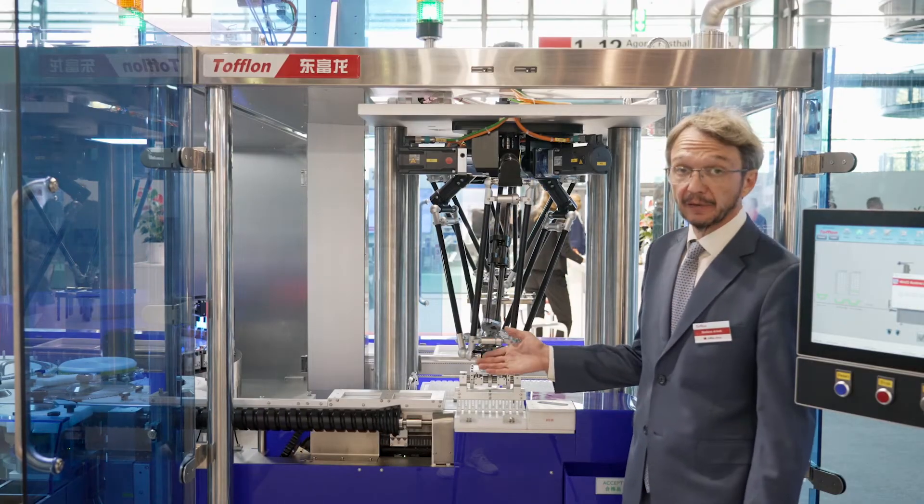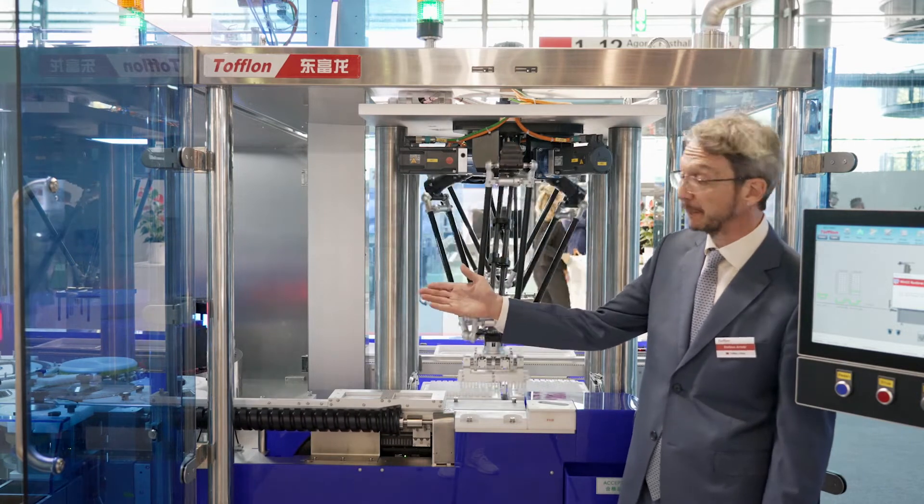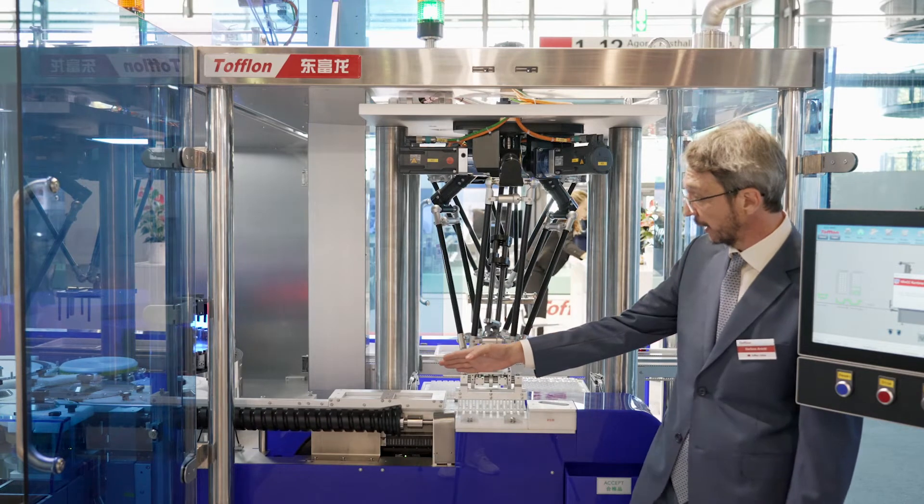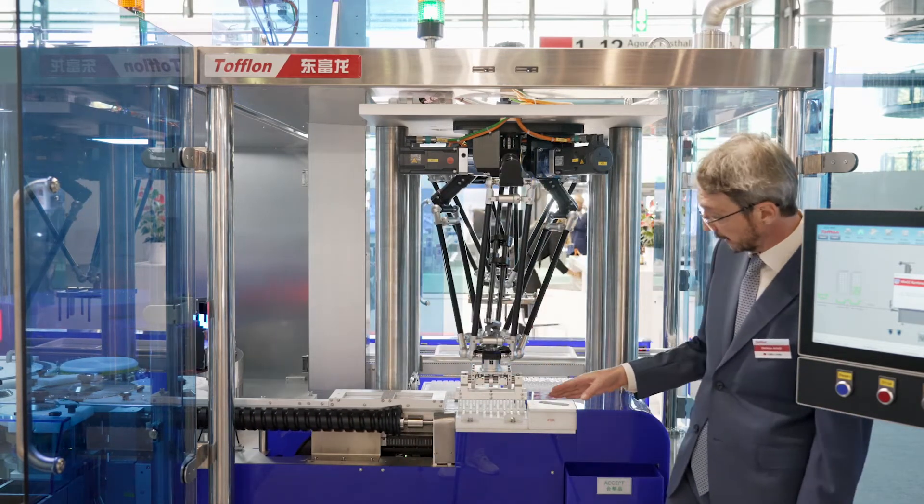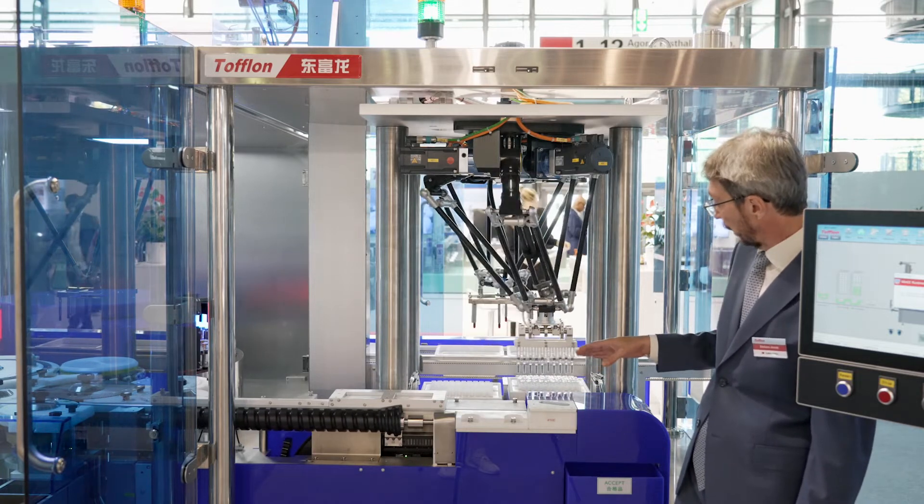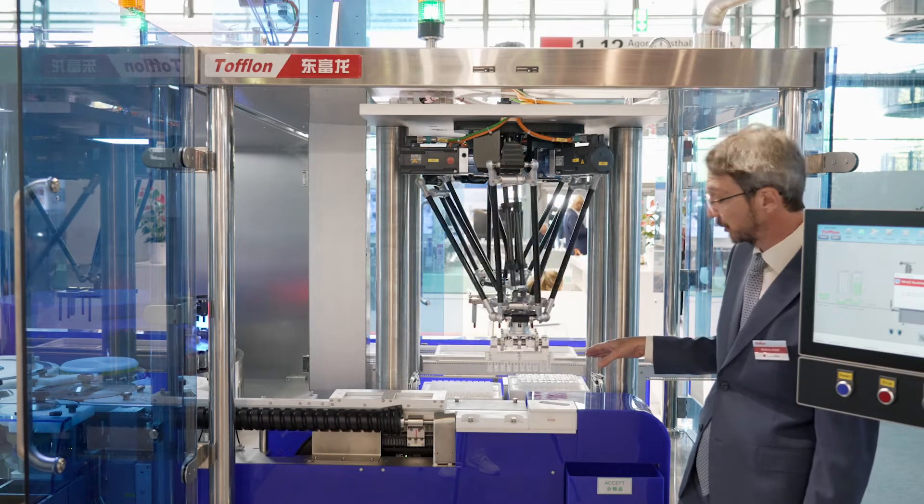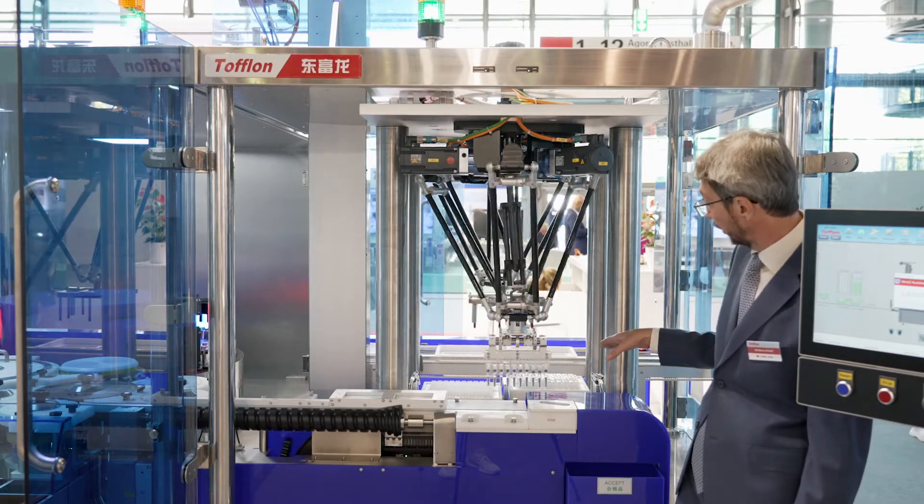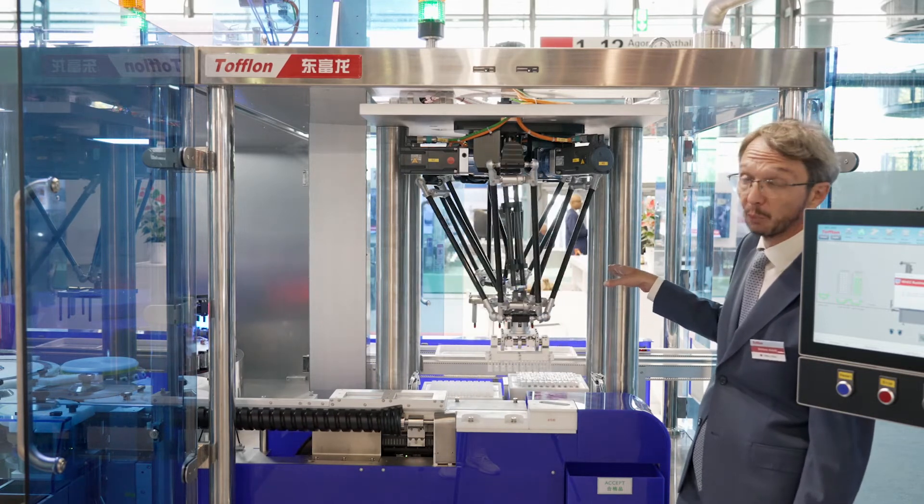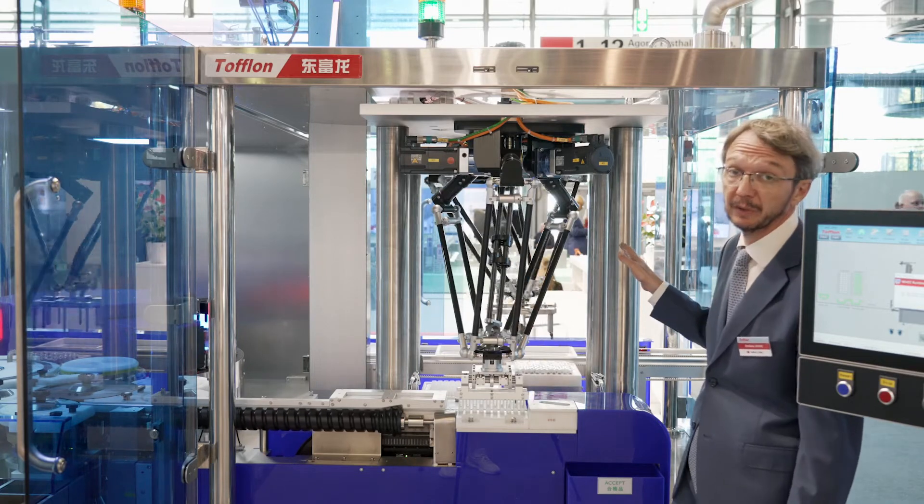This is the last part of the machine. After inspection, after removing the bad containers, the good syringes come out in the output area. They are picked up by the first robot, put in the nest again in a very gentle way, and then the fully loaded nest is put in the tray where it can proceed to the next manufacturing step.